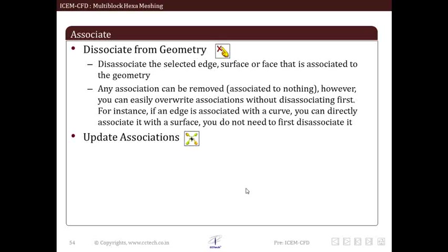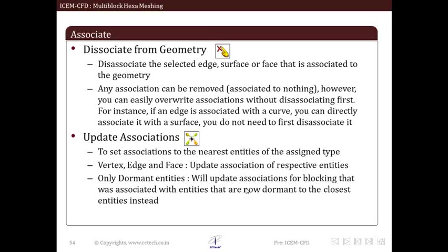The update association allows us to set association to nearest entities of already assigned type. You have provision of selecting blocking entity to update association such as either vertex, edge, face or all of them. Now here a question may arise that what is the need to update association. For this let us say we have some configuration whose blocking we have already done along with proper association. Later we made some changes in this configuration. In such a case we will read same blocking and say update association.